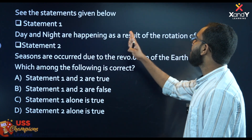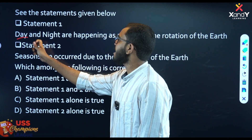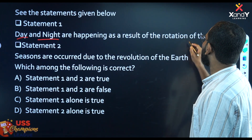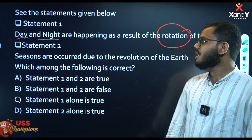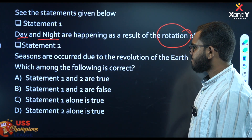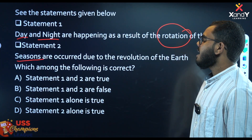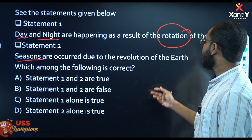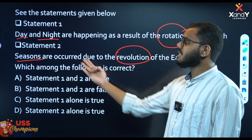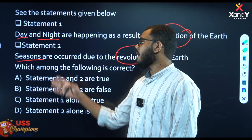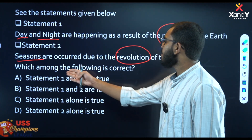Statement: Day and night happen as a result of rotation of the Earth. Seasons happen as a result of revolution of the Earth. They are giving these statements randomly. Which of the following options is correct?